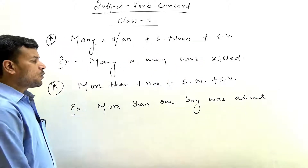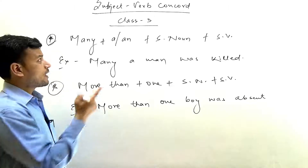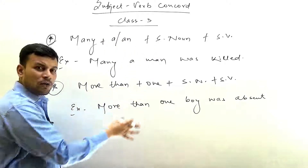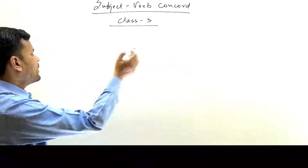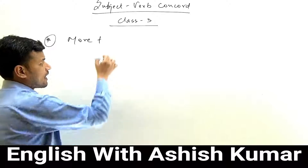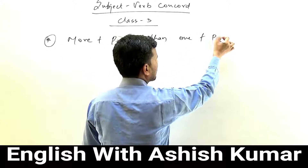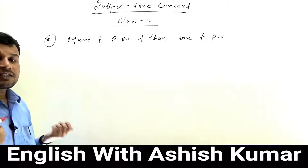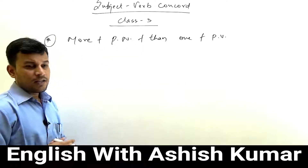So the rule is: 'many' alone takes plural noun and plural verb. But when article 'a' or 'an' comes with 'many,' the noun after it is singular and the verb is also singular. Similarly, 'more than one' takes singular noun and singular verb. However, there is a complication with 'more': if a plural noun comes between 'more' and 'than one,' the verb becomes plural.